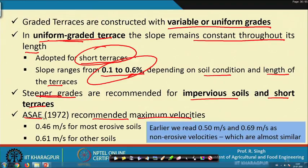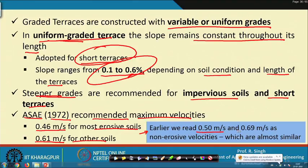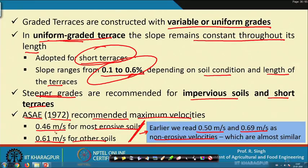The American Society of Agricultural Engineers (1970) recommended non-erosive velocities of 0.46 meters per second for the most erosive soils and 0.61 meters per second for other soils. Earlier lectures cited 0.5 and 0.69 meters per second — these are almost similar. We should go with the lower recommendation to ensure both criteria are met.